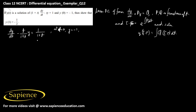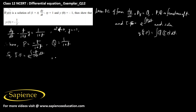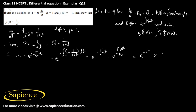Here P equals minus t/(1+t) and Q equals 1/(1+t). The integrating factor equals e to the power of the integral of minus t/(1+t) dt, which equals e to the power of minus the integral of (1 minus 1/(1+t)) dt. This gives e to the power of minus t squared/2 times e to the power of log|1+t|, which simplifies to e to the power of minus t times (1+t).